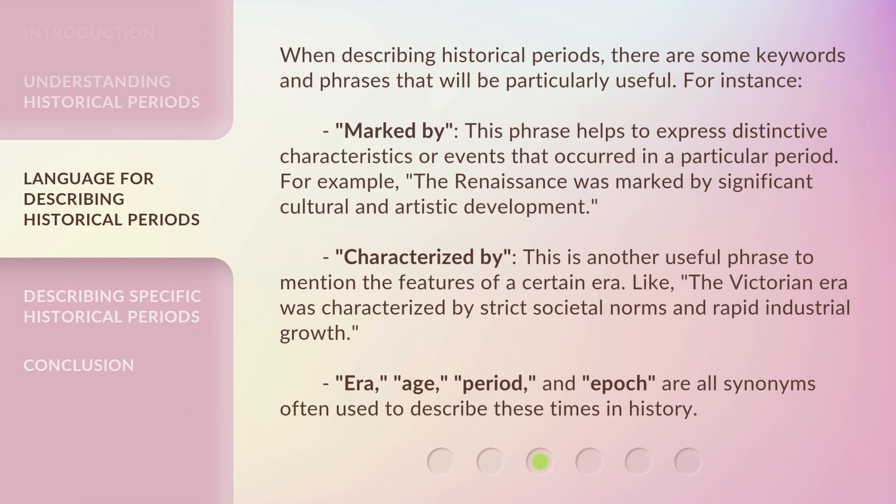When describing historical periods, there are some keywords and phrases that will be particularly useful. For instance, 'marked by' — this phrase helps to express distinctive characteristics or events that occurred in a particular period. For example, the Renaissance was marked by significant cultural and artistic development. 'Characterized by' is another useful phrase to mention the features of a certain era — like, the Victorian era was characterized by strict societal norms and rapid industrial growth. Era, age, period, and epoch are all synonyms often used to describe these times in history.